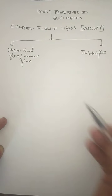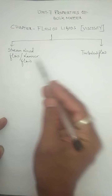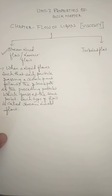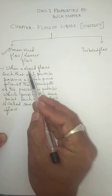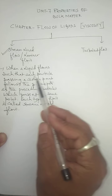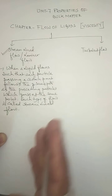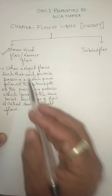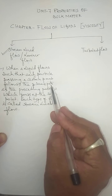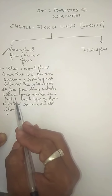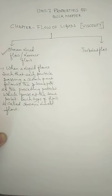So the flow of any liquid is expressed by two types: one is called streamline flow, also called laminar flow, and the other is called turbulent flow. In this chapter we focus mostly on streamline flow. Let's define streamline or laminar flow. When any liquid flows in a certain direction, the path followed by the liquid passes through a number of points, where each particle passing a certain point follows the same path as the preceding particles which passed the same point. Such type of flow is called streamline flow, also called laminar flow.